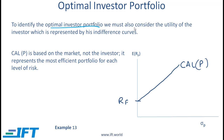To identify the optimal investor portfolio we must also consider the utility of the investor, which is represented by his indifference curves. The capital allocation line is based on the market, not the investor — it represents the most efficient portfolios for each level of risk. The CAL is even more efficient than the efficient frontier because with the efficient frontier we had a constraint: we could only use risky assets. With the capital allocation line that constraint is removed because we can combine the risk-free asset with risky assets.